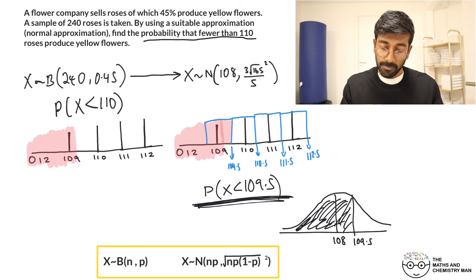Our standard deviation is that tricky number over there, right? So enter that in very carefully. So that there's going to be, we'll say, 3 root 165 all over 5, and our mean is 108. There we go. Enter it all in and I've got probability there of 0.577. Okay, and there we go, super pleased with that there.